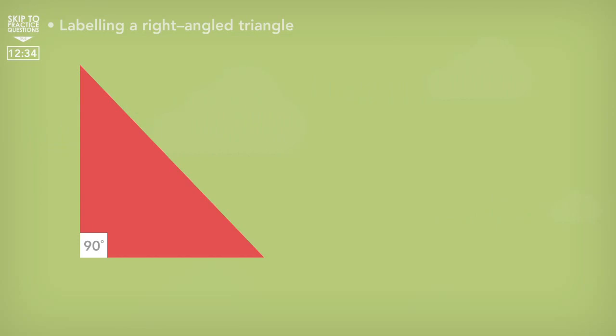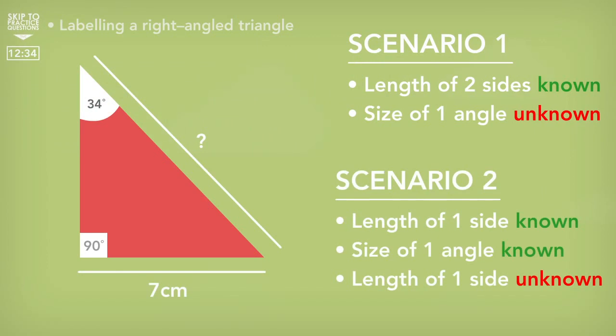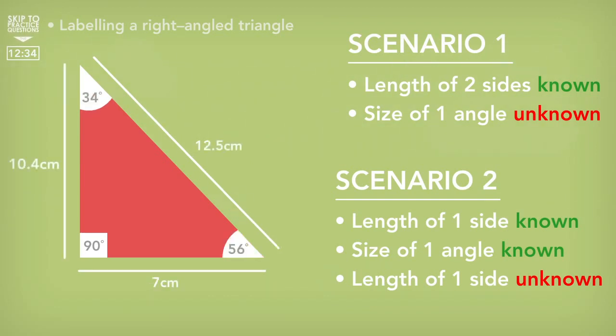We use trigonometry with right angle triangles when we know the length of two sides but we want to find the size of one of our missing angles, or we have one side and one angle that is not the right angle and we want to find the length of one of our other sides. One of the main purposes of trigonometry is to find all the sides and angles of a right angle triangle but when we only have limited information. There are other uses but right angle triangles are the first step.